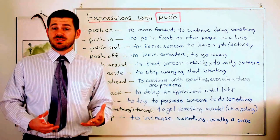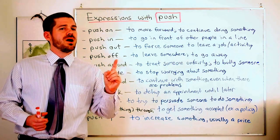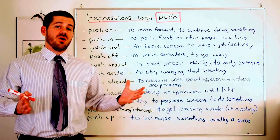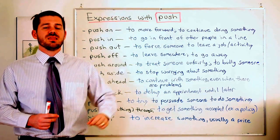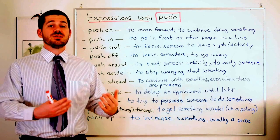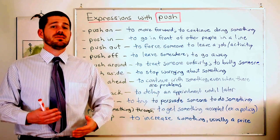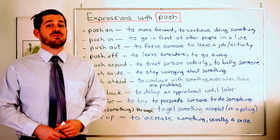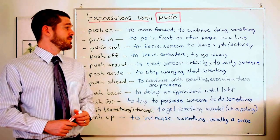Another example: imagine I'm on a sports team and there's one guy who doesn't cooperate with the rest of the team. All the other members might try to push out this one member — they take a vote, and they might not tell him about the next practice or the start time of a game, trying to convince him to leave the group. So they're trying to push him out.